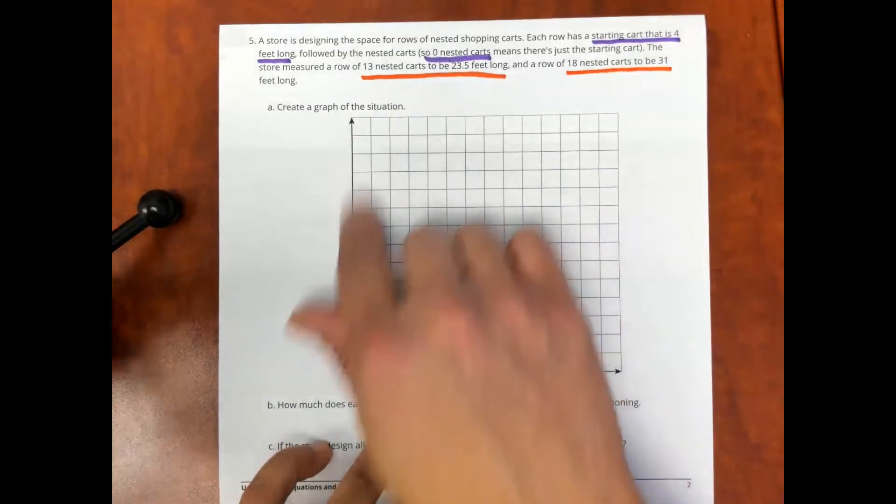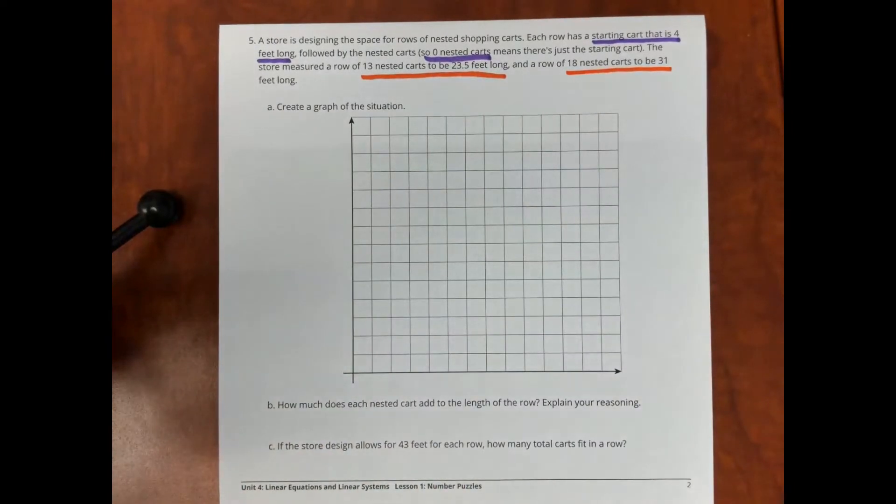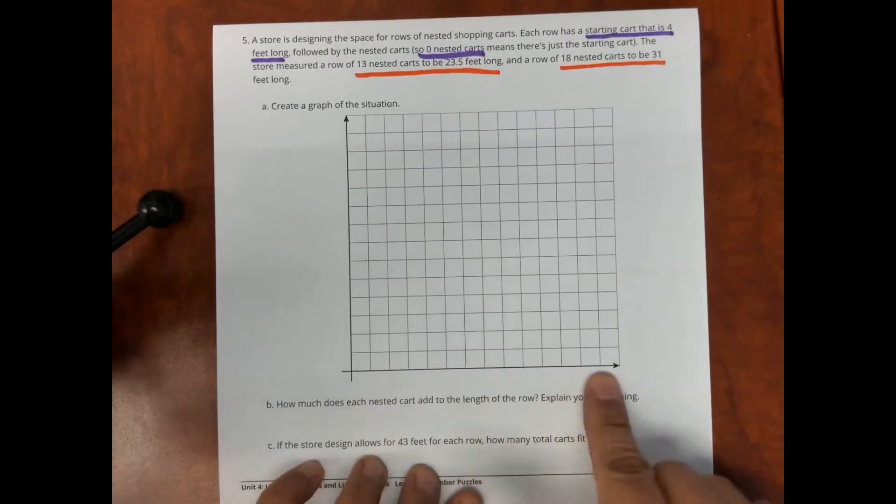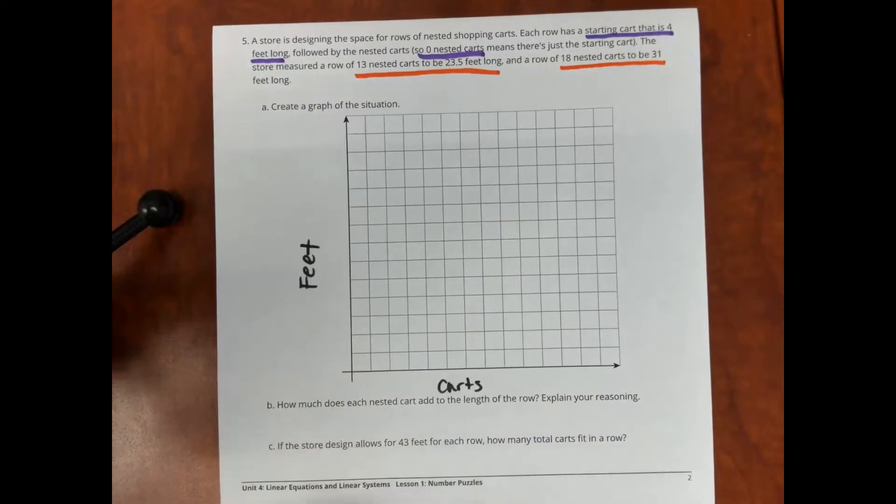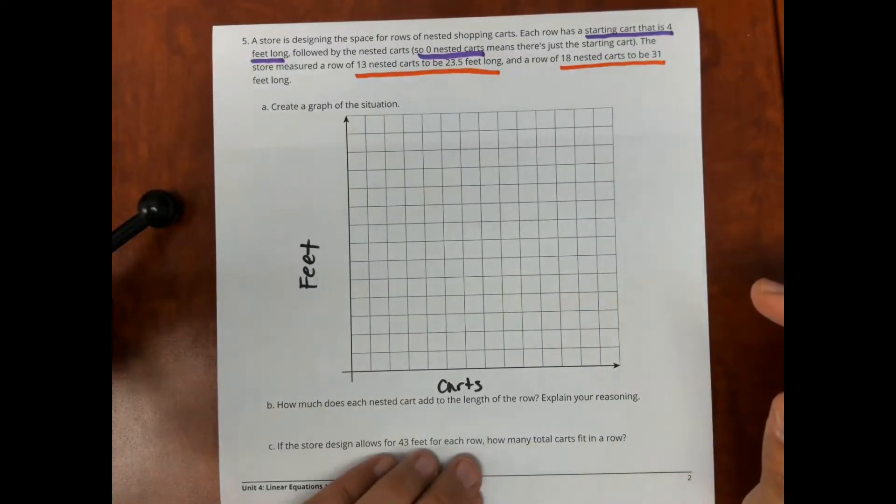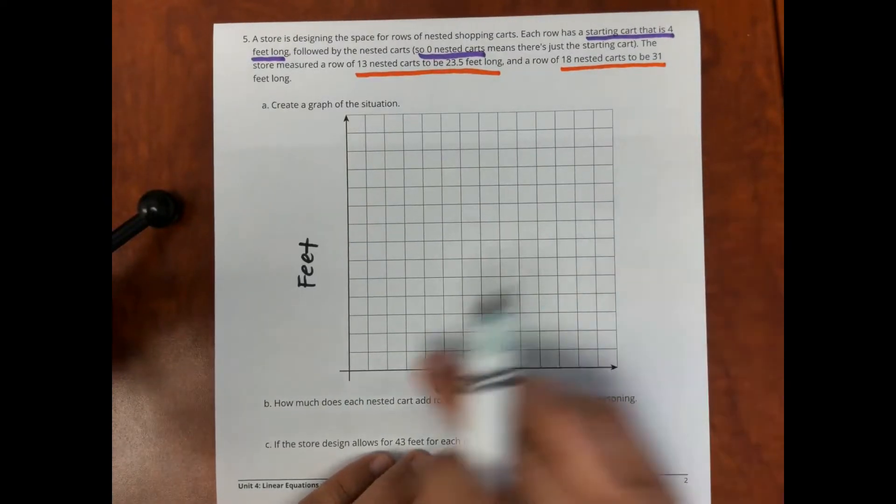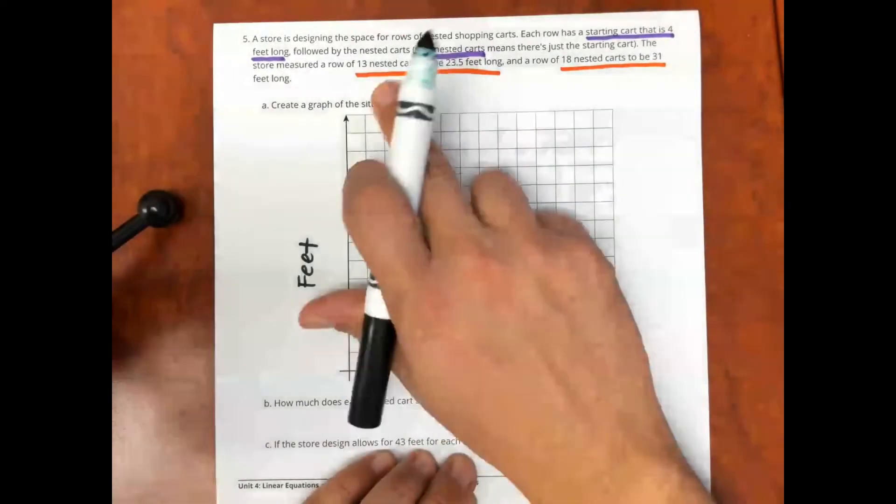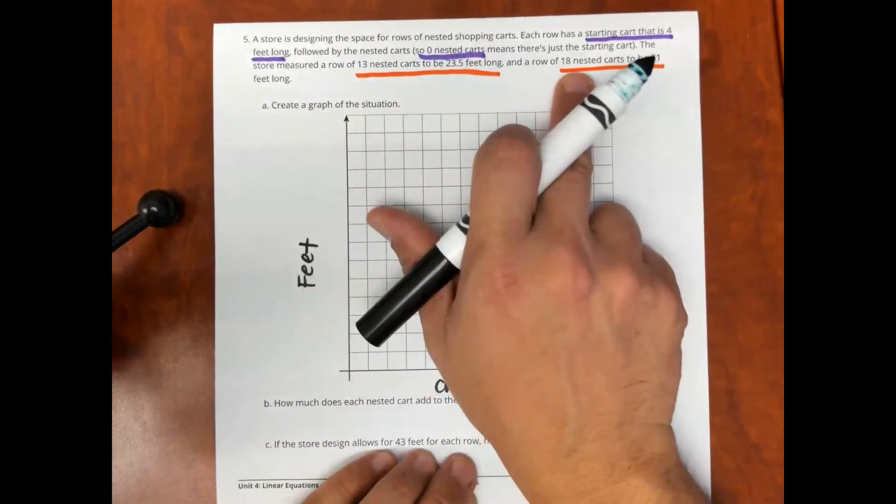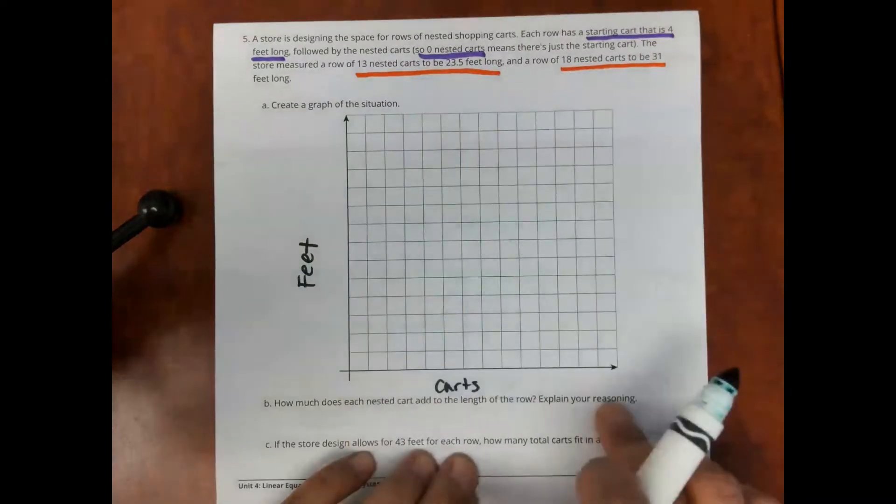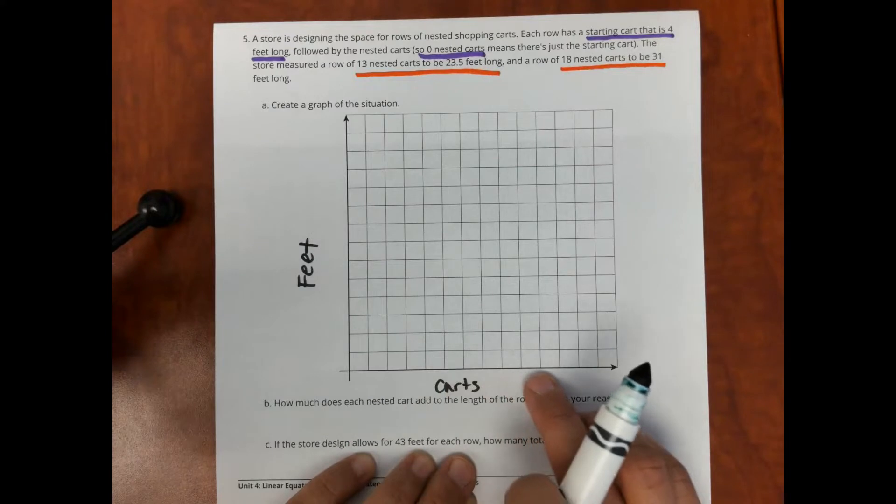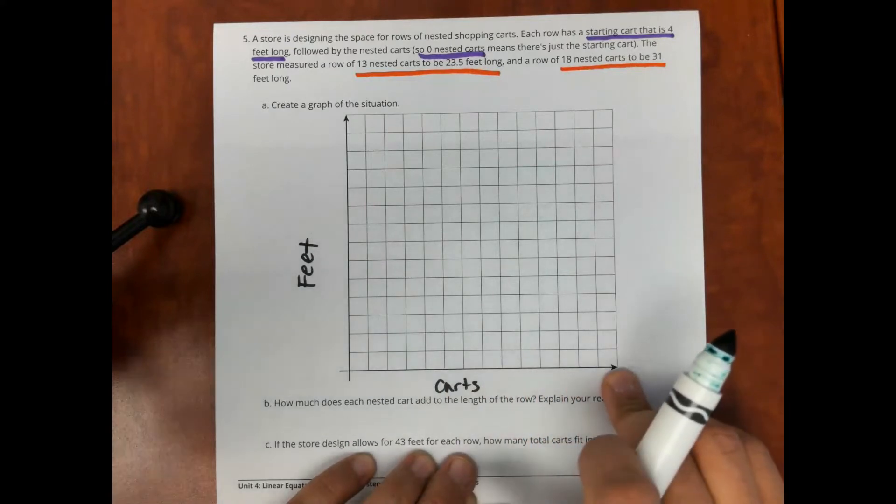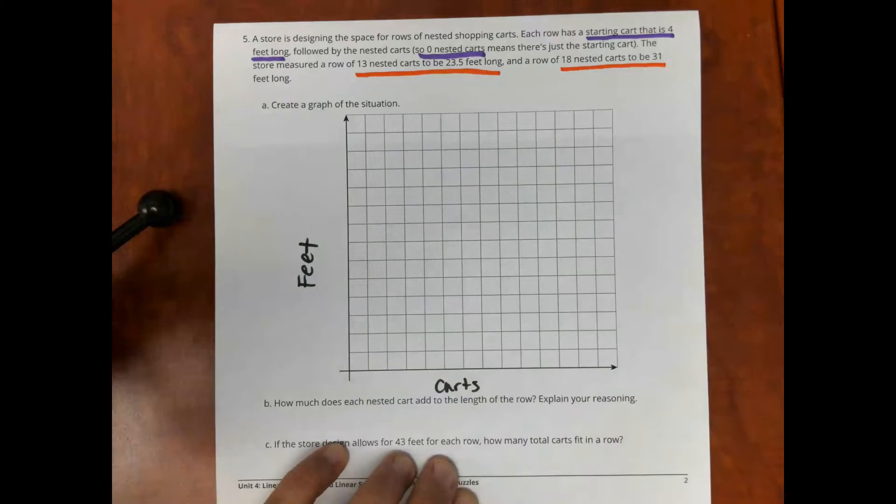Okay, so first thing we need to do is label the axes. This axis here is going to be the number of carts. This axis is going to be the feet. So now when I go to label my axes, I want you to see here the numbers. I go all the way up to 13 and to 18. If I go by 1s, I'm not going to get enough. It's not going to be enough. So, I'm going to go by 2s on this axis.